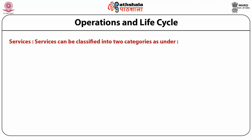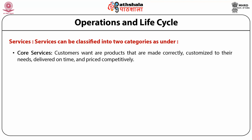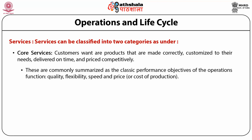Services can be classified into two categories: core services and value-added services. Core services are products that customers want made correctly, customized to their needs, delivered on time, and priced competitively. These are commonly summarized as classical performance objectives of the operational firm, carrying the properties of quality, flexibility, speed, price, and cost of production.